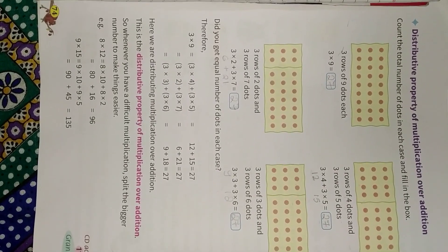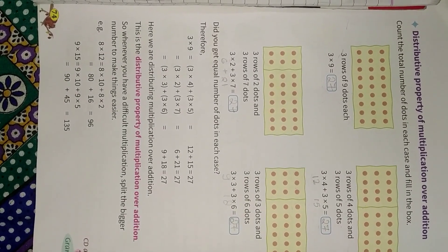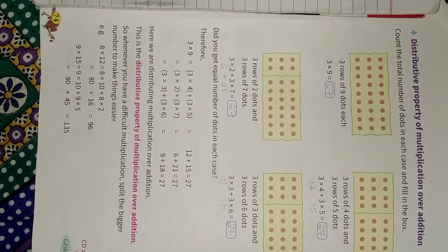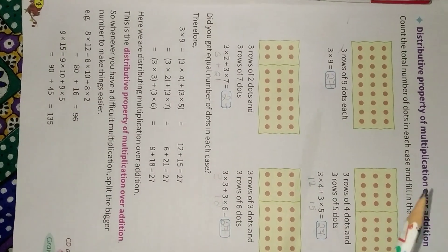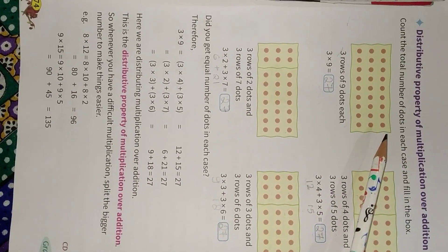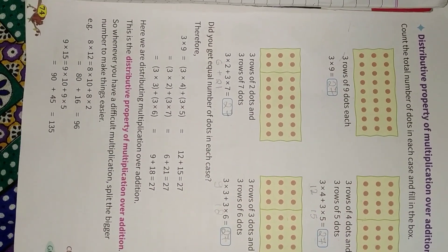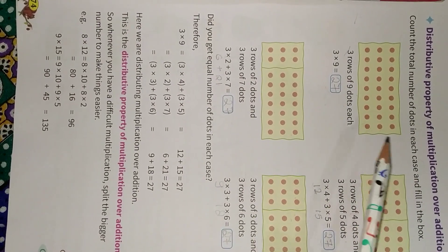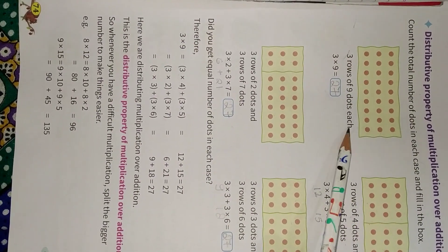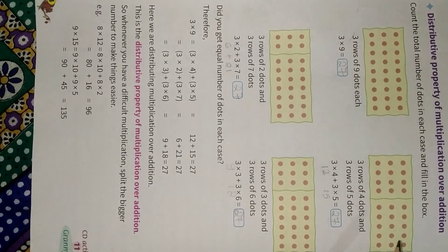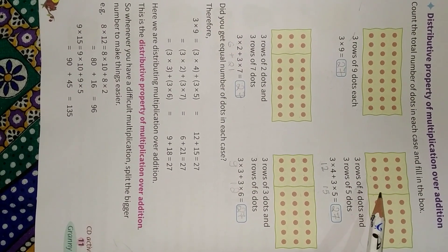Hello students, today we will start with the distributive property of multiplication over addition on page number 74. Look at this box — this box contains three rows and each row contains nine dots, so the total number of dots are 3 into 9. When you multiply the number of dots with the number of rows, we get the total number of dots: 27. Now we divide this box into two parts in three different ways.